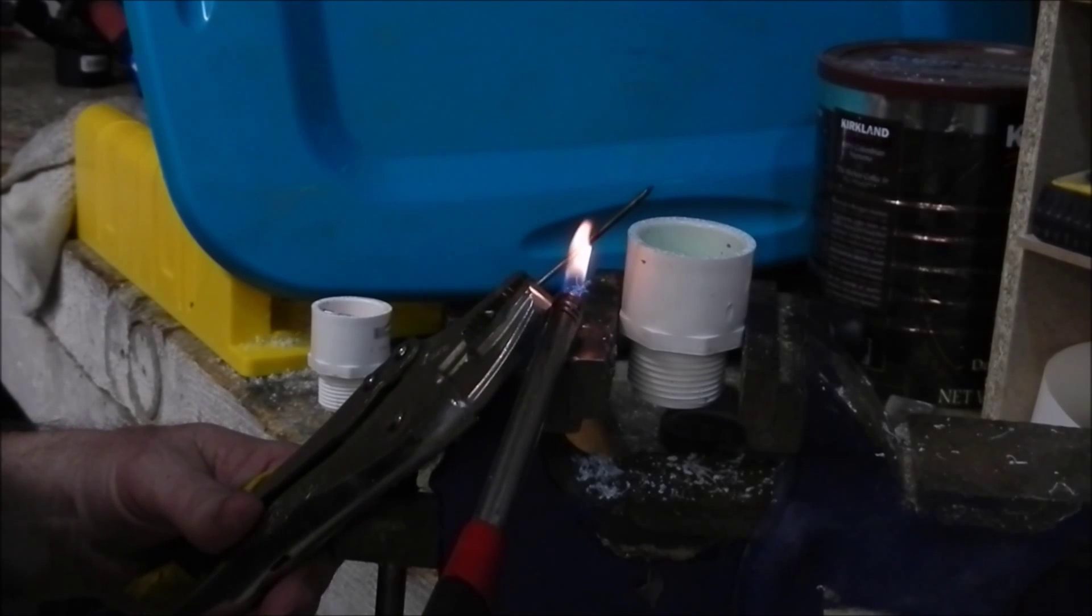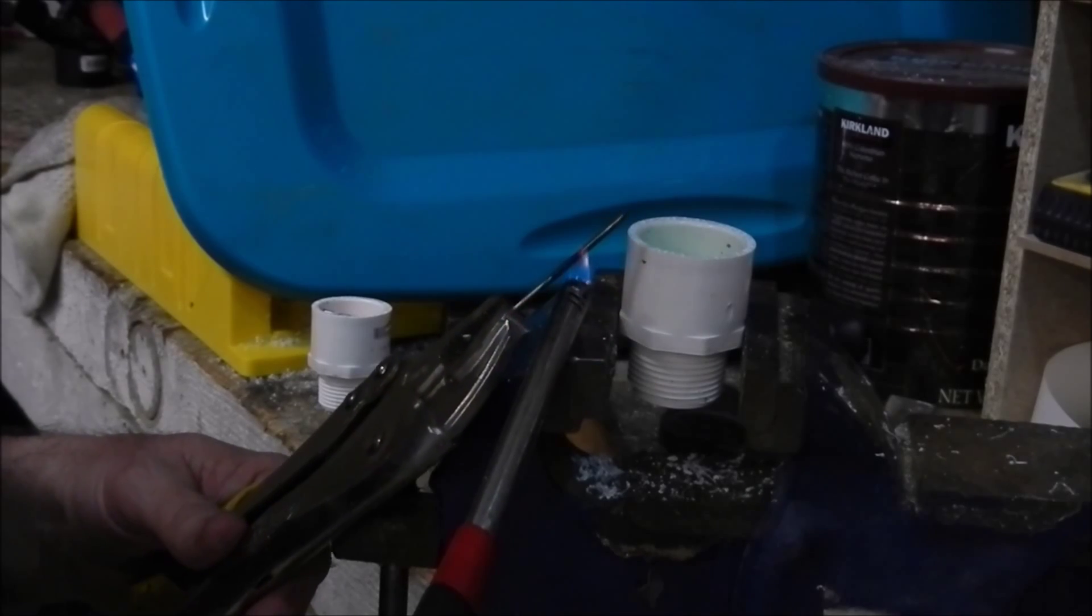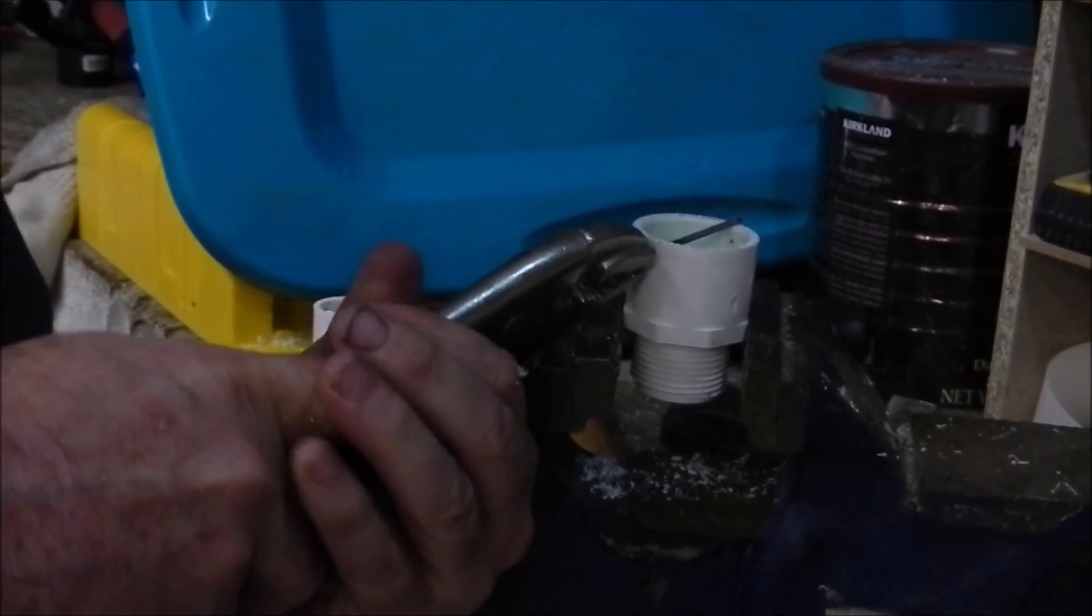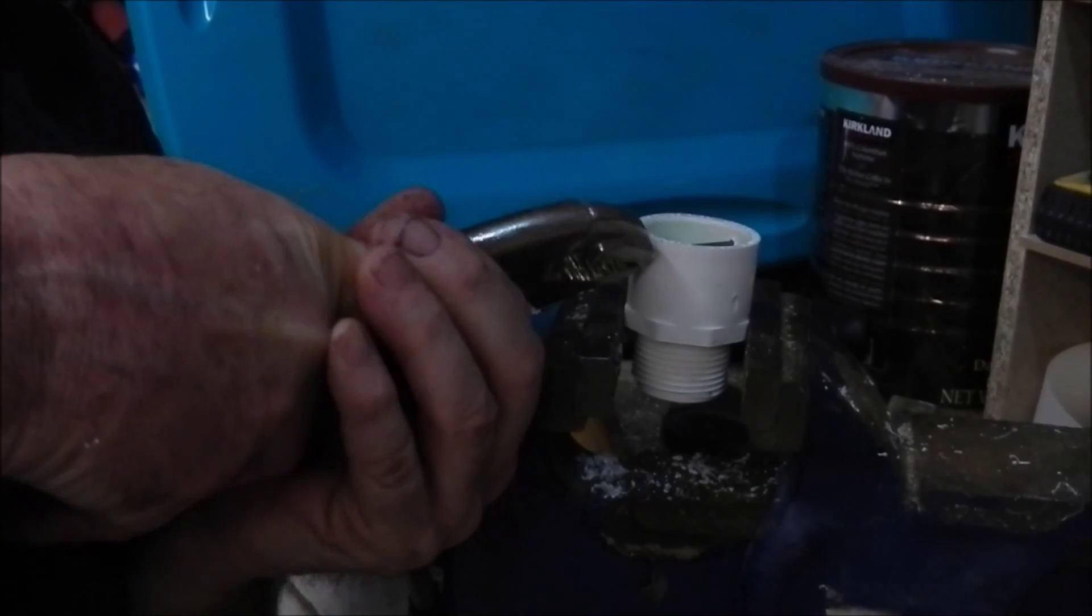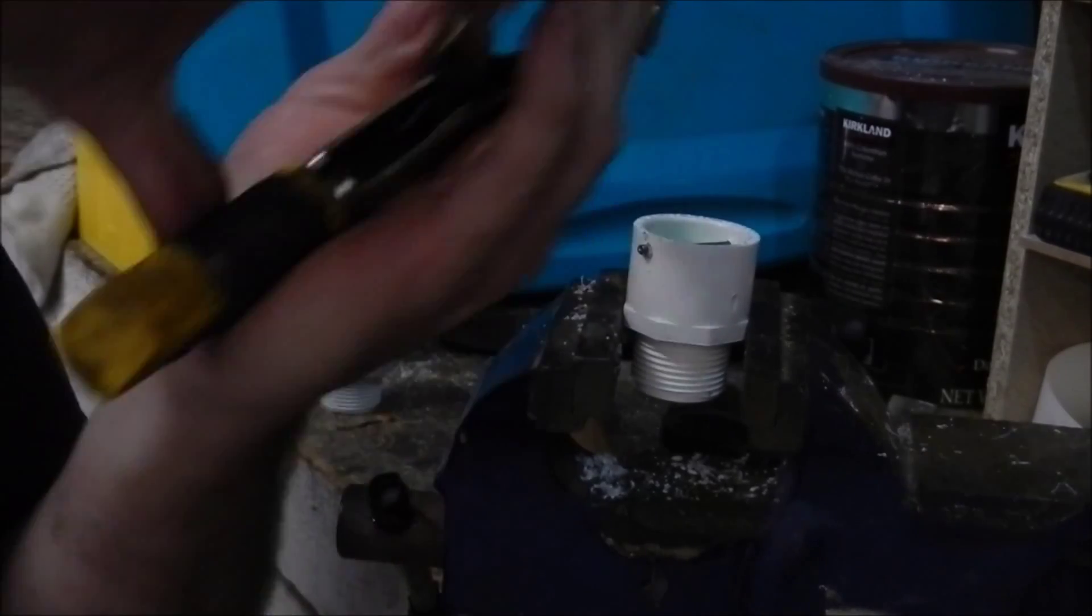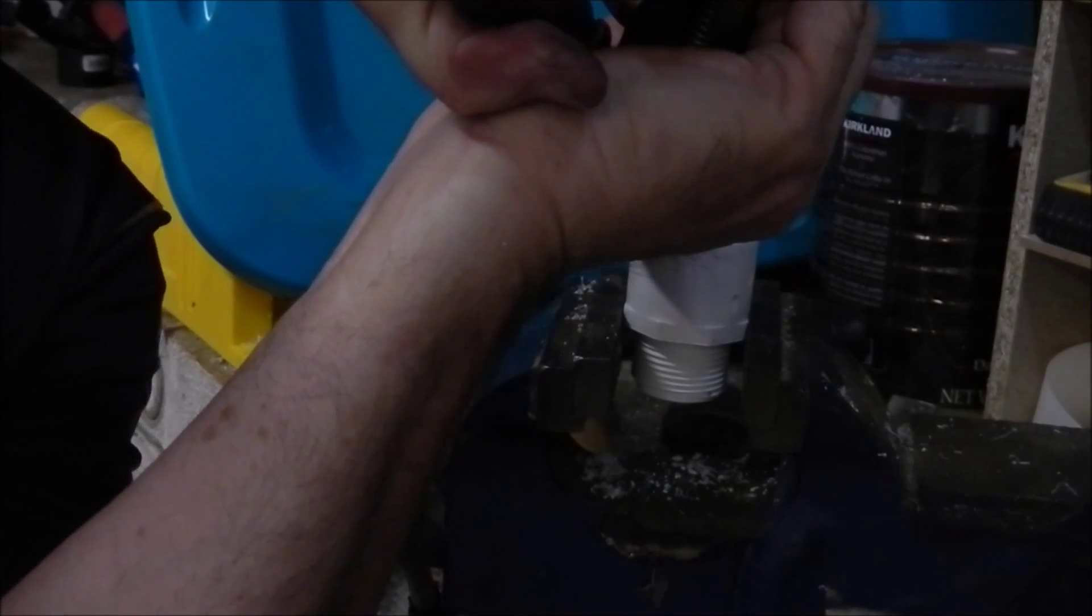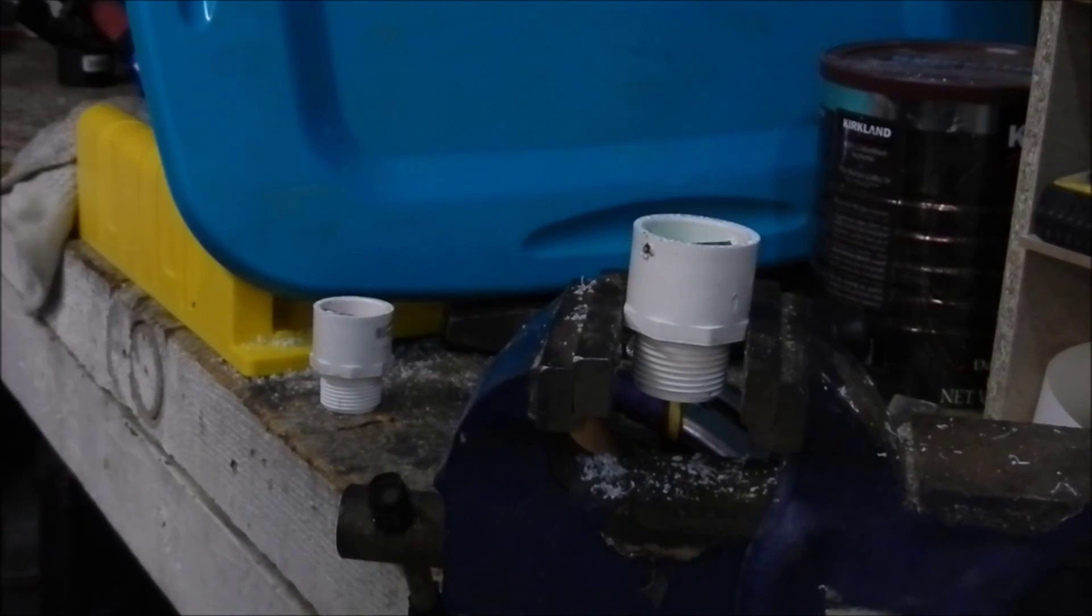Usually the flame right before it starts turning yellow is where it's the hottest. I'll hold it about middle of the yellow and then stick it in there. Okay, let's squeeze the lid on until it's flush. There we go, melted a little bit there so I'll trim that off.